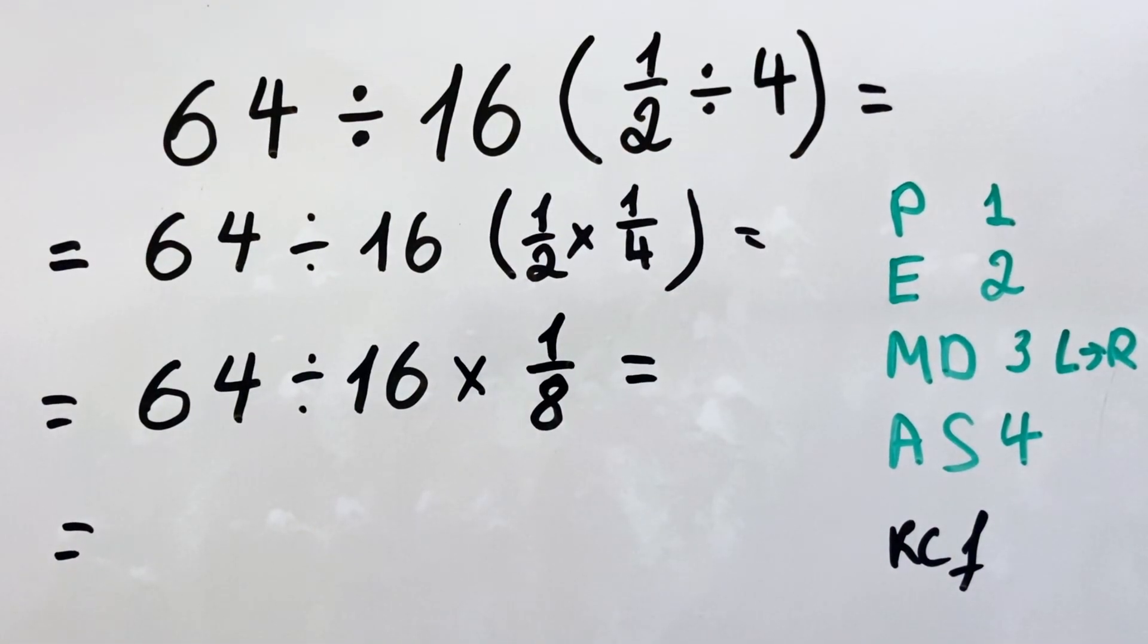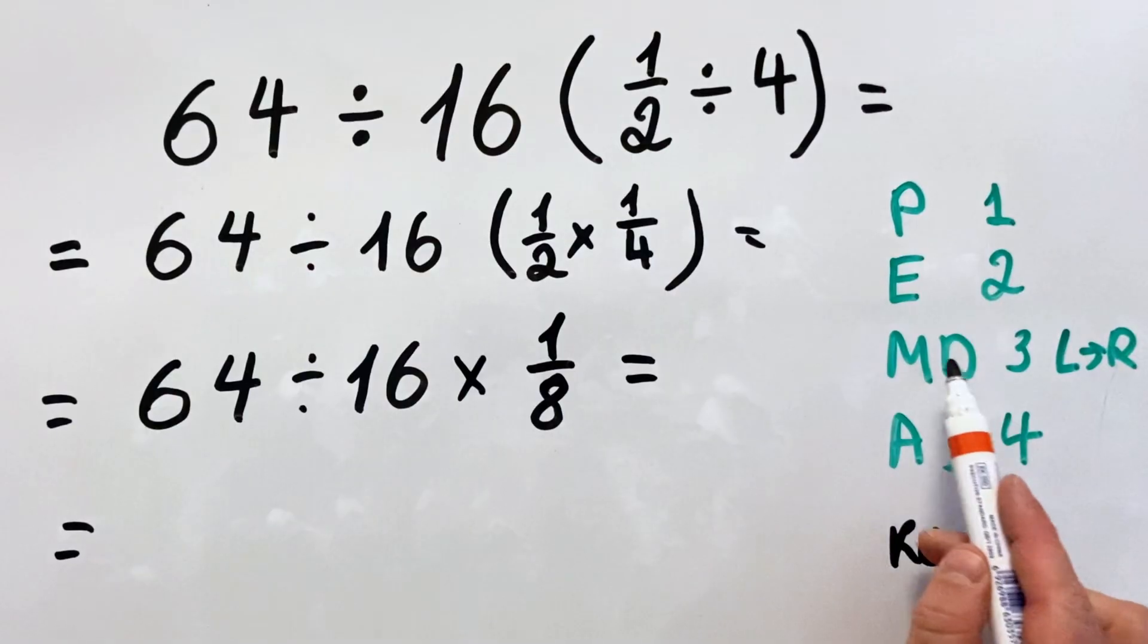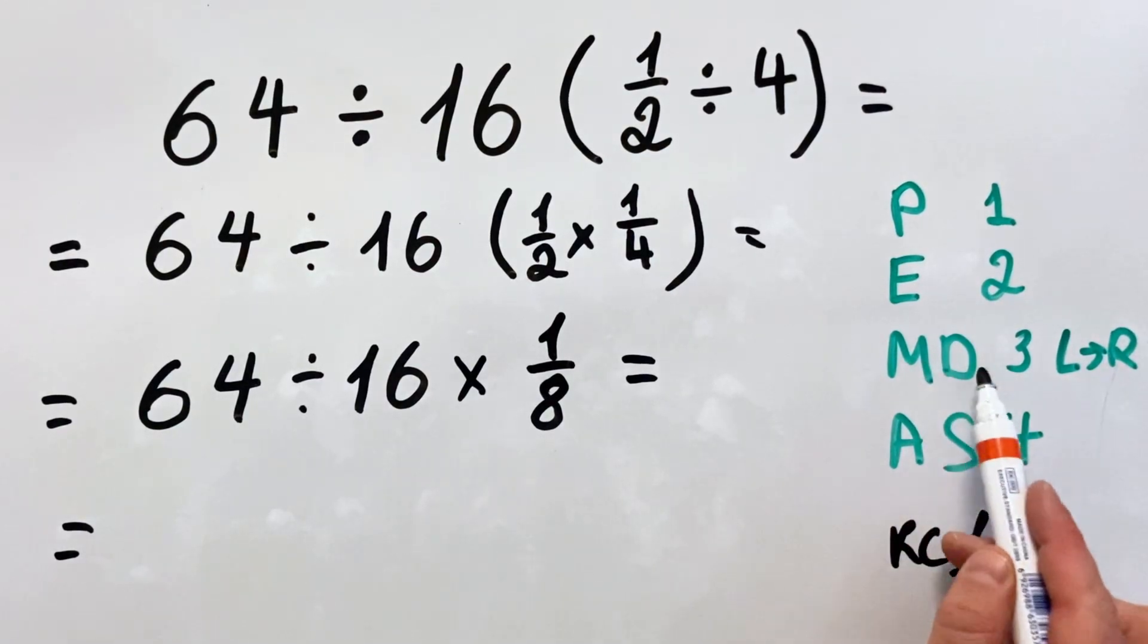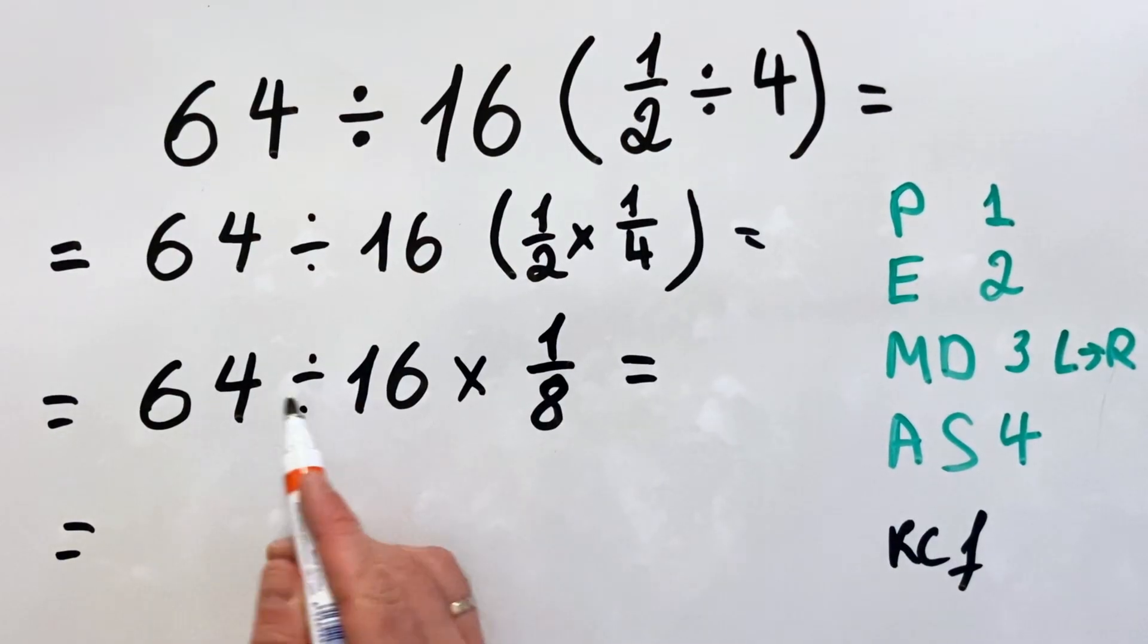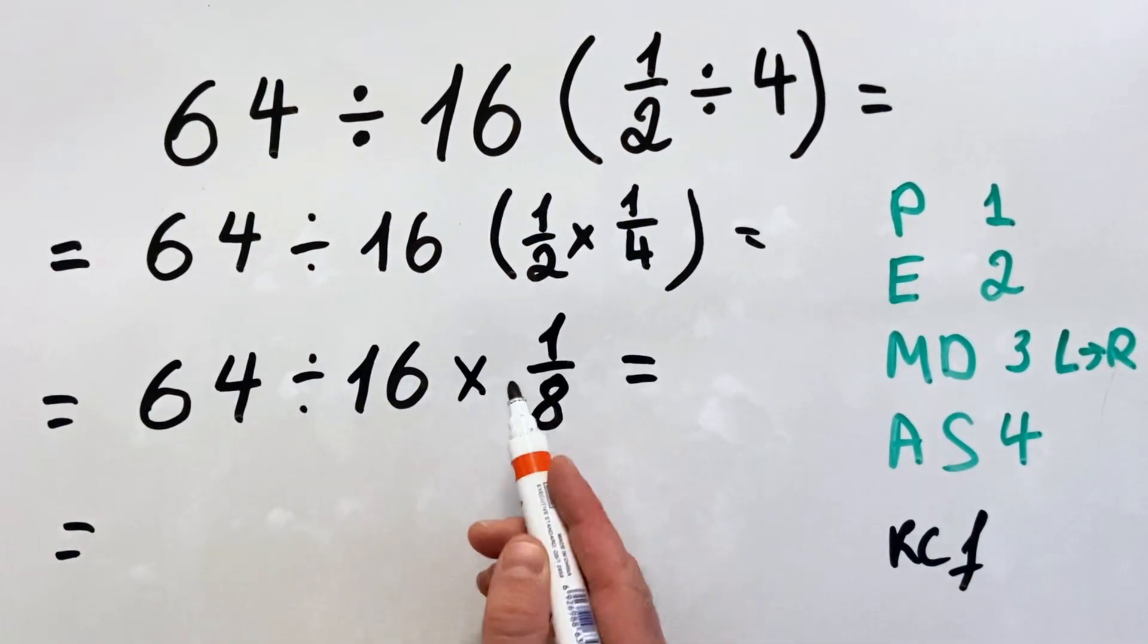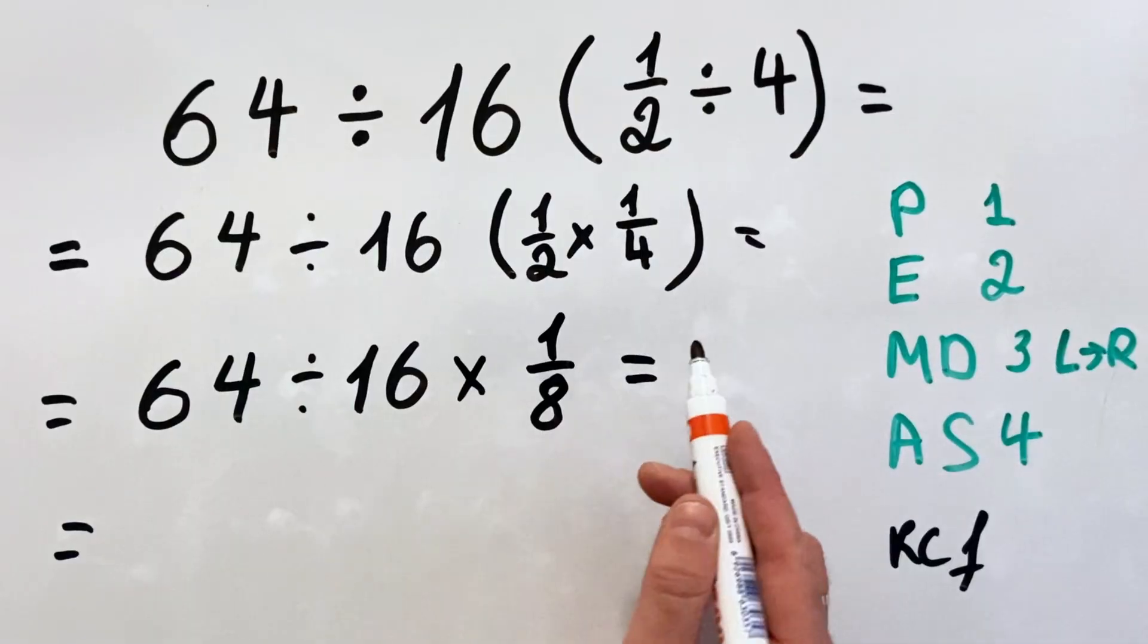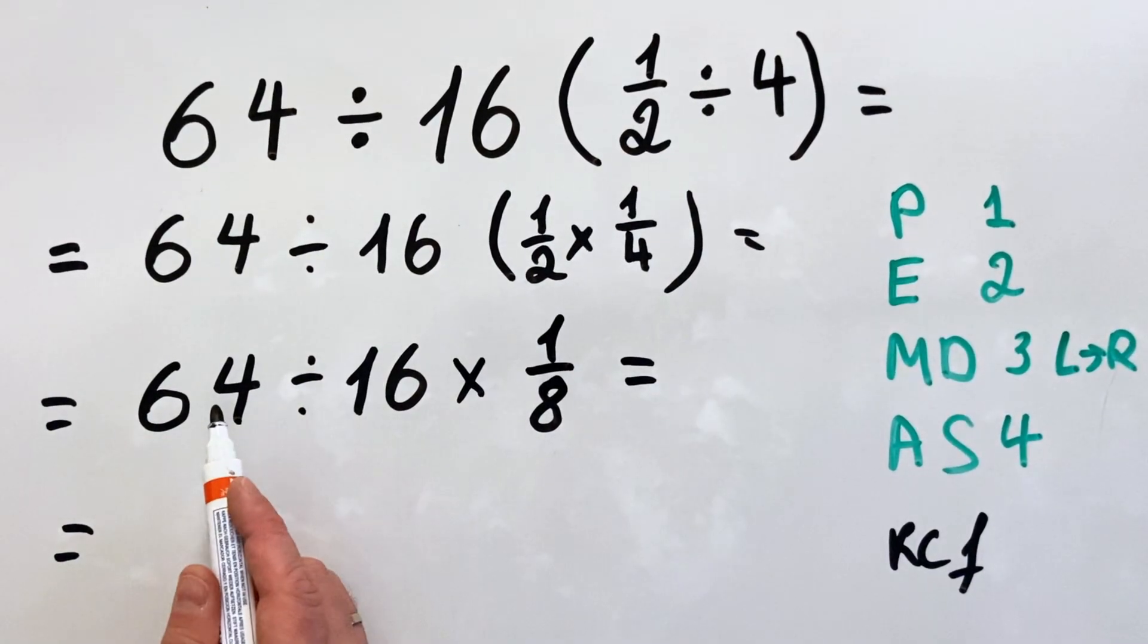Now here we have division and multiplication. Therefore we apply the equal priority and left to right rule. So in this case we'll do first 64 divided by 16, then the result will multiply by 1 over 8. 64 divided by 16 is 4, multiply by 1 over 8.